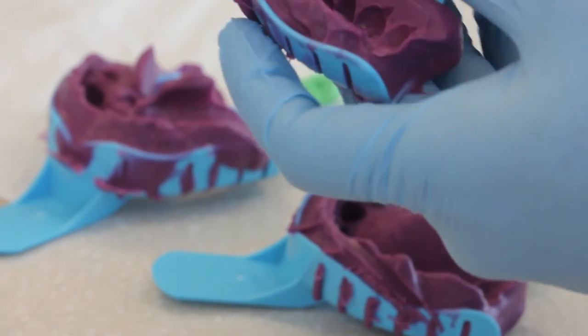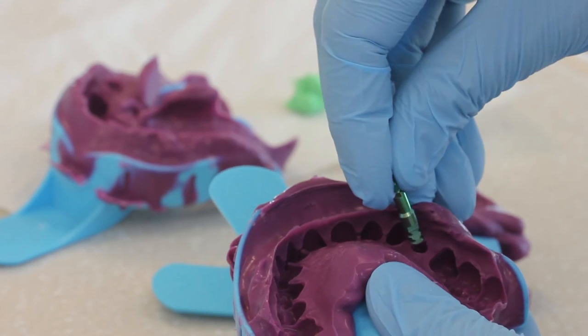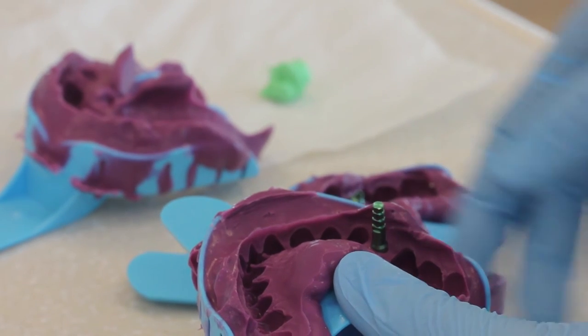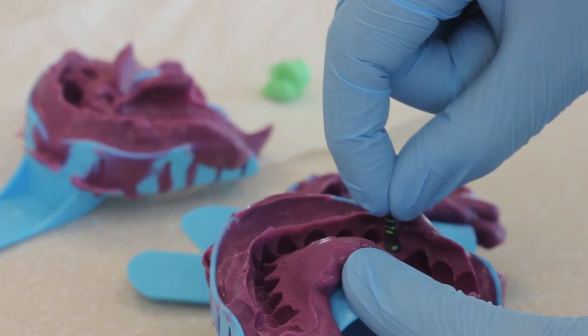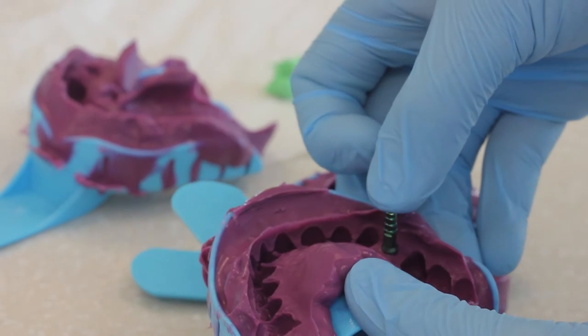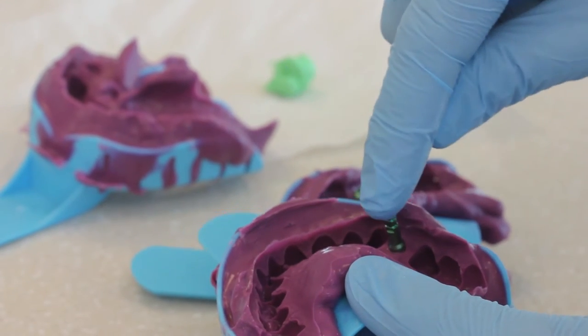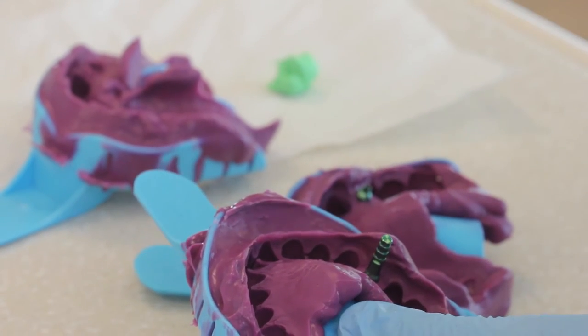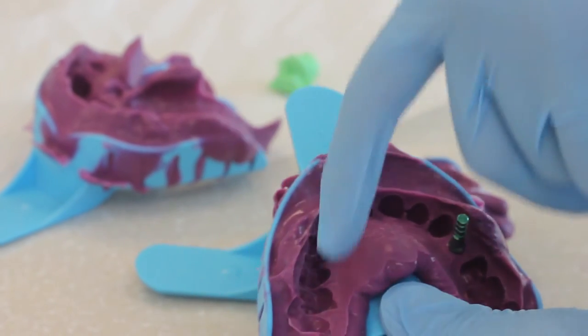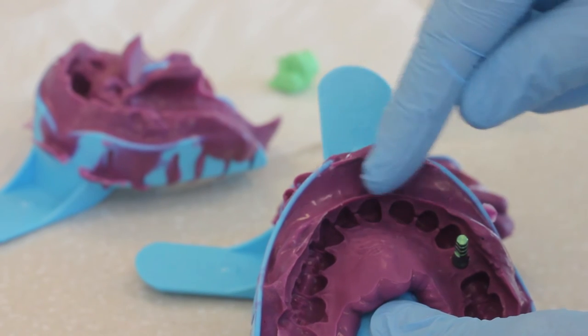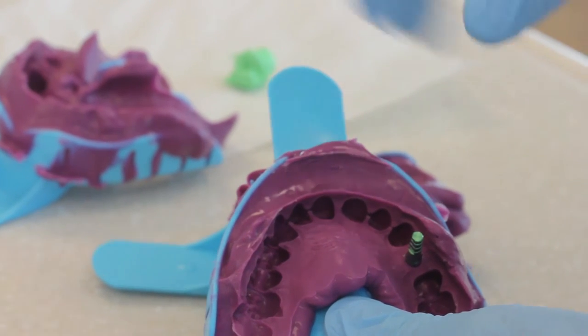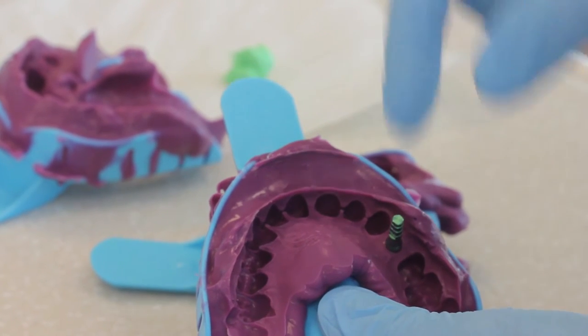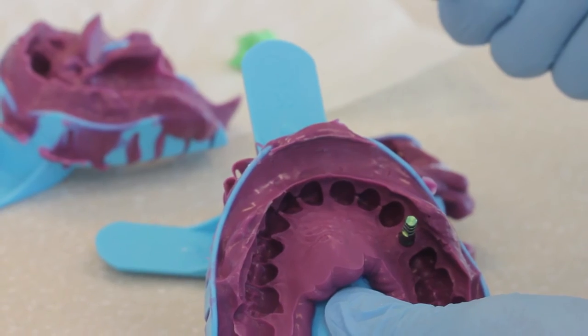In the Zimmer impression coping, it's got three sides to it, so it's triangular in shape. You want to insert that back into the impression in the same orientation. Line up the three sides and push down until it seats all the way. Check for the implant analog stability. You don't want it to rock a lot. Also look at the occlusal surfaces and the sizal lingual surfaces of the adjacent teeth to make sure you're able to articulate this master cast appropriately with the opposing arch.